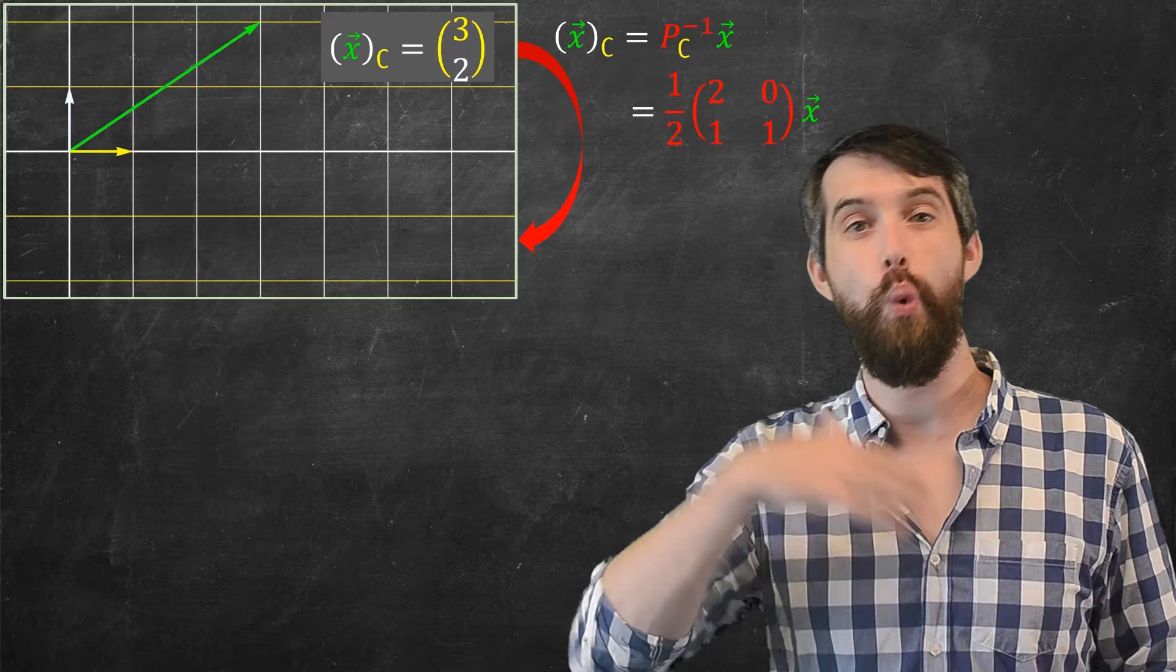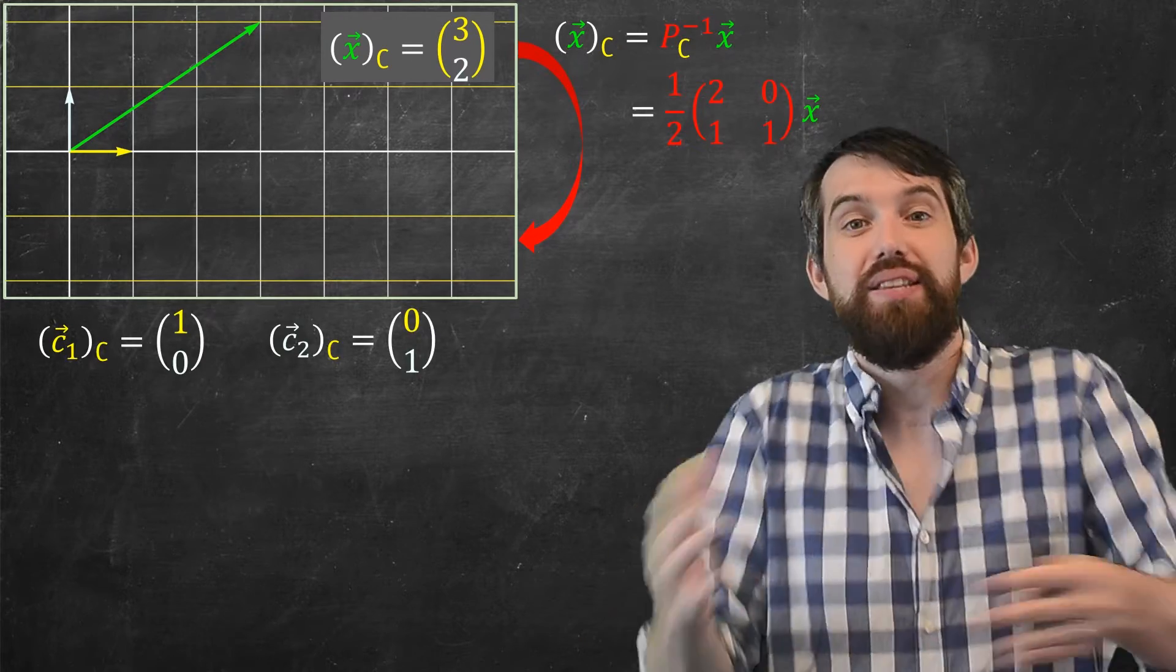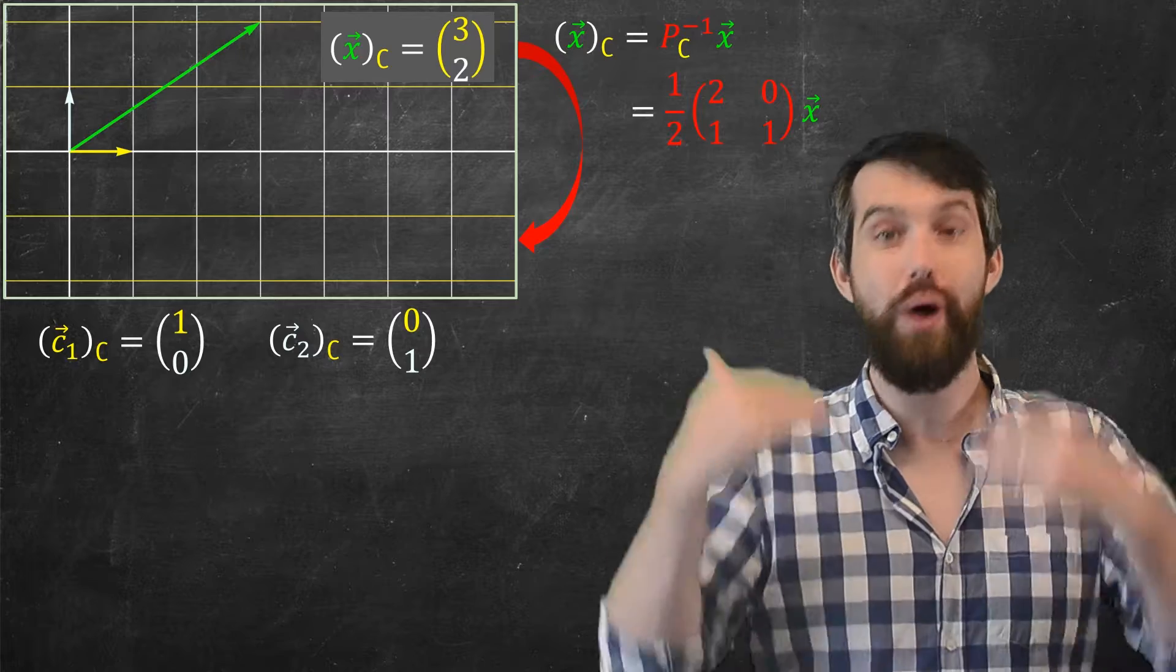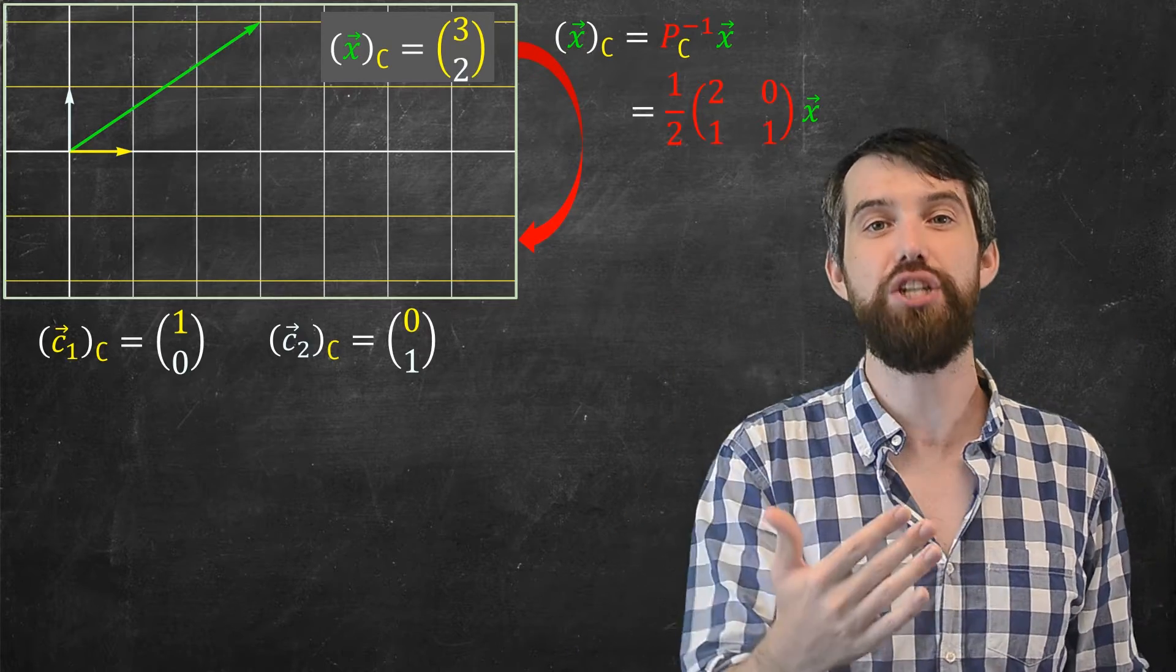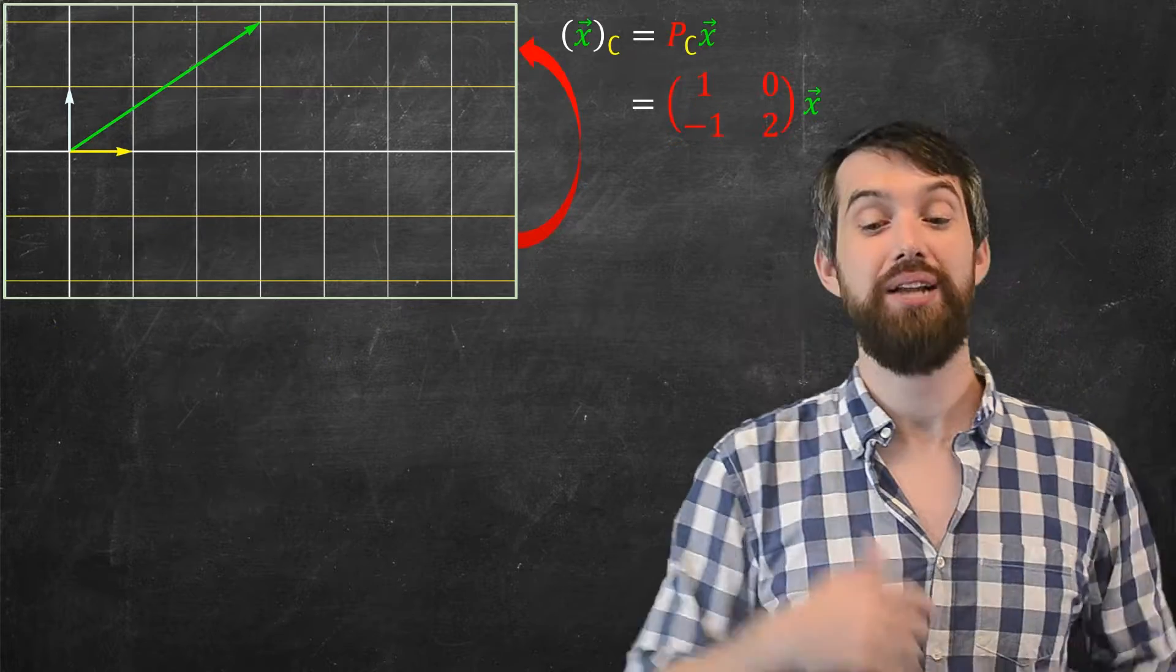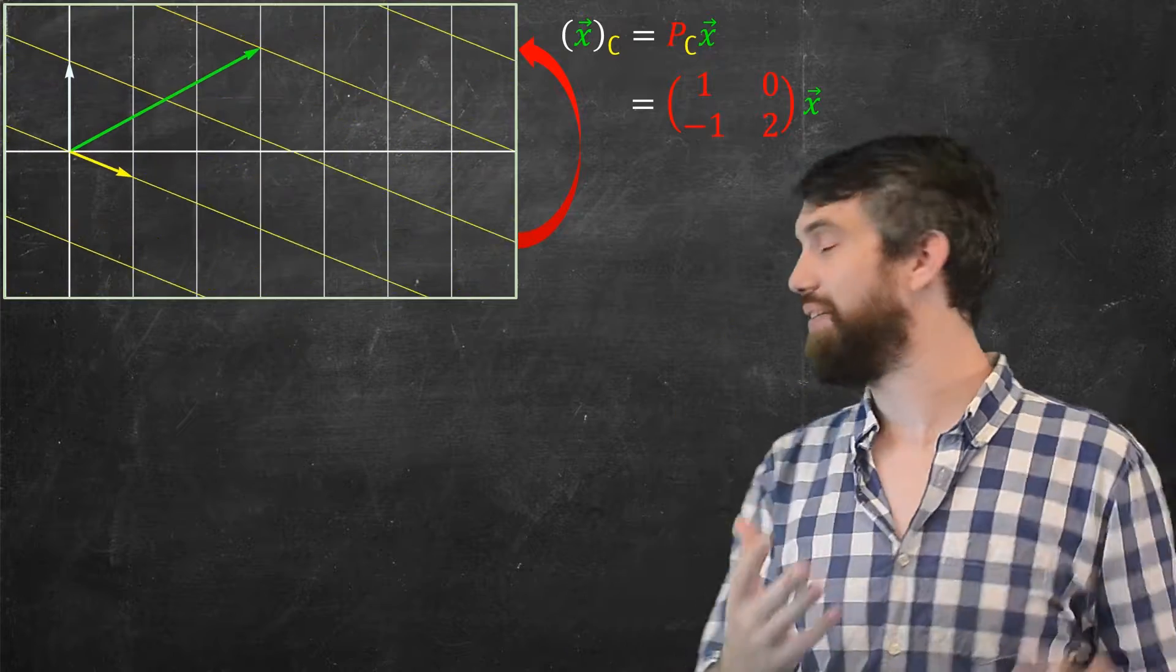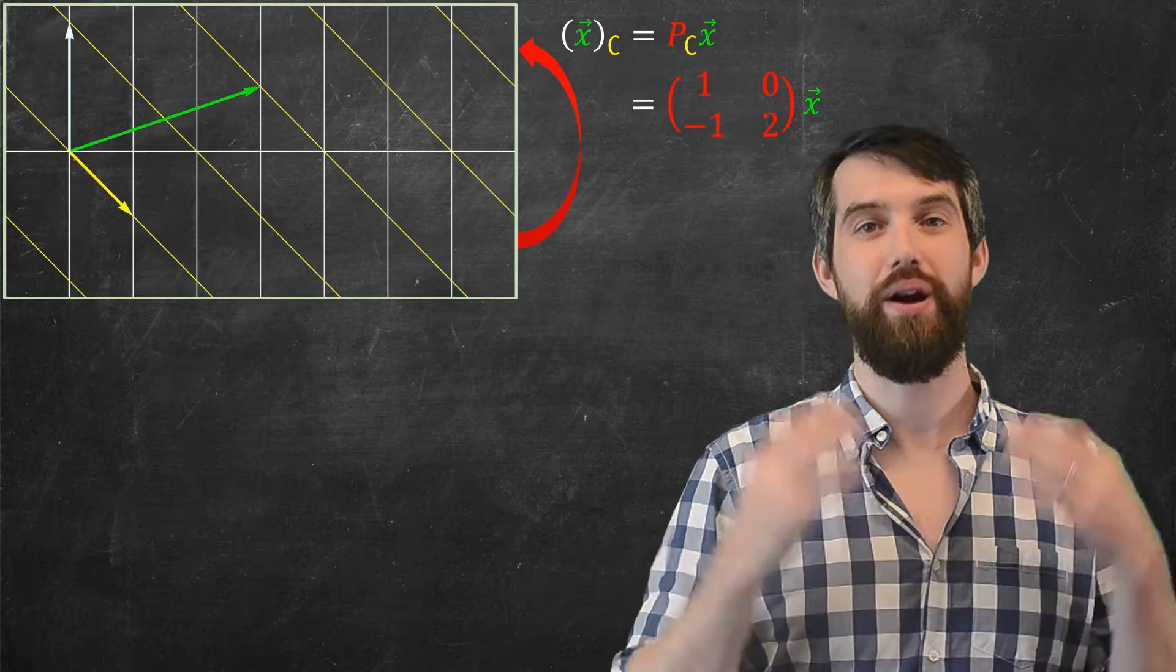That is, taking one step to the right is just the same thing as taking c1 in the c basis. That 0, 1, the one step up, that's just the same thing as c2 in this c basis. And exactly the same way I can go and I can invert back by taking the multiplication by p sub c, and that goes and takes everything and transforms it back to where it began.